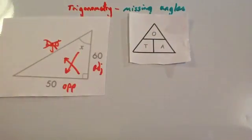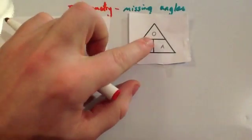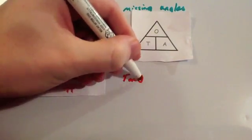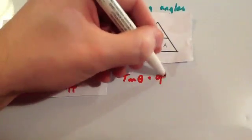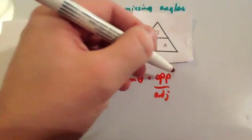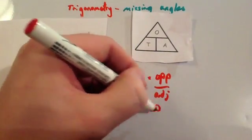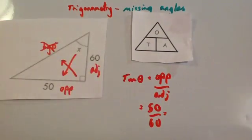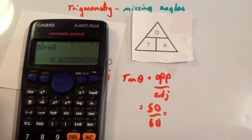We've got the 'Two Old Angels' triangle. We want to find out what the angle is, so we want to find out what the tan of the angle is. Cover up tan — that tells you tan θ equals opposite divided by adjacent. So tan θ equals opposite divided by adjacent, which equals 50 divided by 60. When you do 50 divided by 60 in your calculator, you get 0.83 recurring.